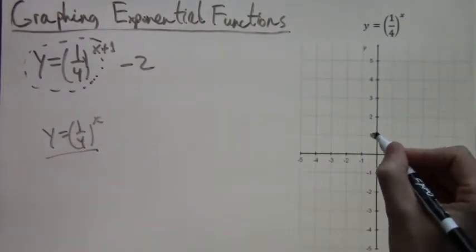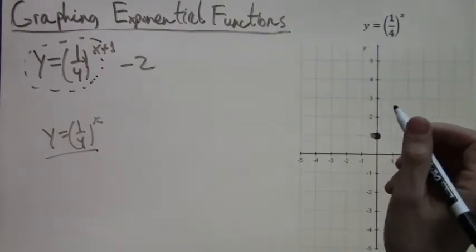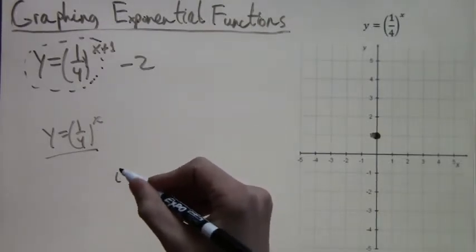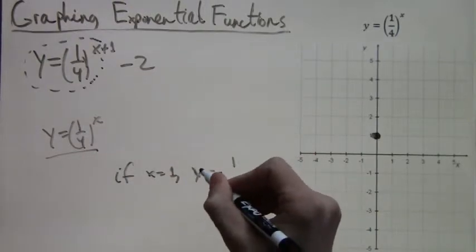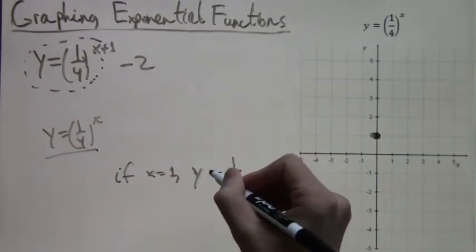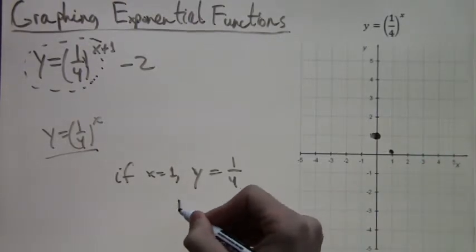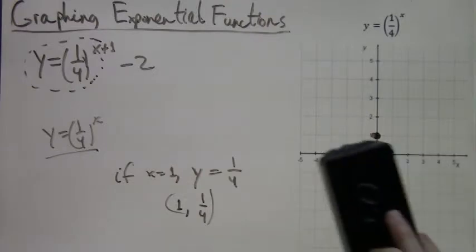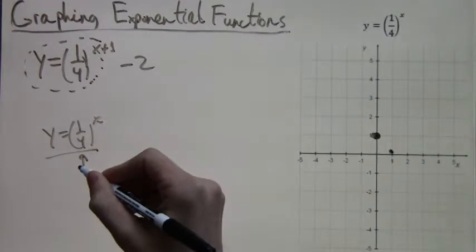Alright, well, we already know since it's a very basic exponential function, it's going to go through the point zero one, I already marked it on the graph. Next, since plugging in x equals one is very easy, we will also graph this point. When x equals one, one fourth to the one is just itself, one fourth. So we get the point one comma one fourth. And it's on the graph now.